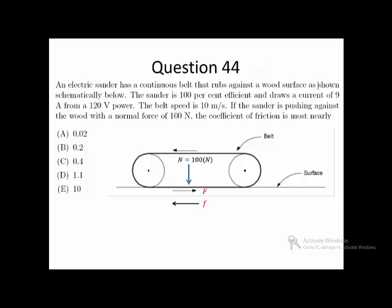In response to the motion of the belt at the bottom, the frictional force will act in the left direction. Recall that the speed of the belt is constant at 10 meters per second, which means the net force on the belt is zero. This implies that the magnitude of force F equals the magnitude of the frictional force.